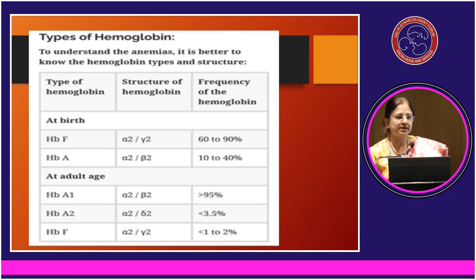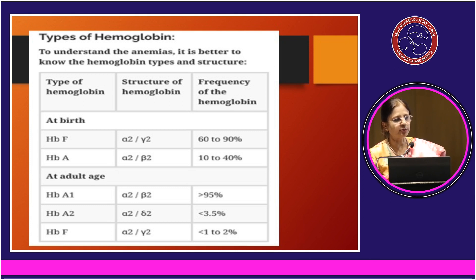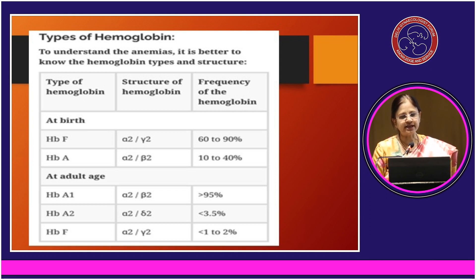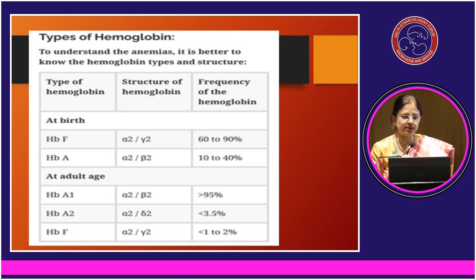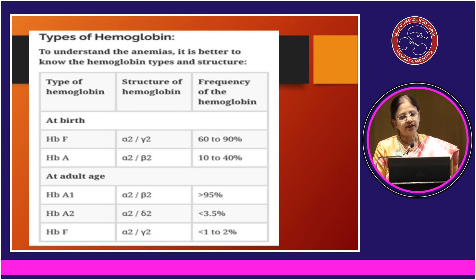To understand the pathology better, we need to understand the types of hemoglobin. At birth or in the intrauterine period, we have two types: fetal hemoglobin (two alpha and two gamma chains, around 60–90%) and adult hemoglobin HbA (two alpha and two beta chains, around 10–40%). In adult life, HbA with alpha-2 and beta-2 chains forms more than 95% of hemoglobin, hemoglobin A2 with alpha-2 and delta-2 chains is less than 3.5%, and fetal hemoglobin is only 1–2%.